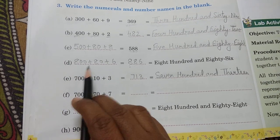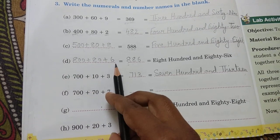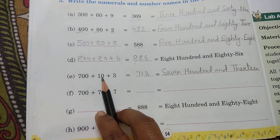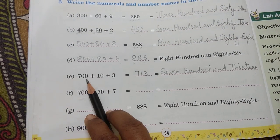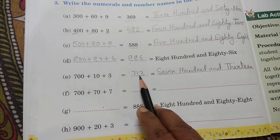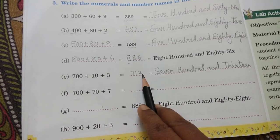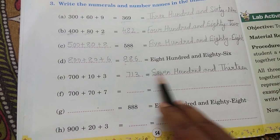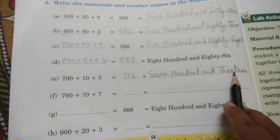Expanded form: eight hundred plus eighty plus six. Here we have seven hundred, ten, and three. Seven, one, three - seven hundred and thirteen.